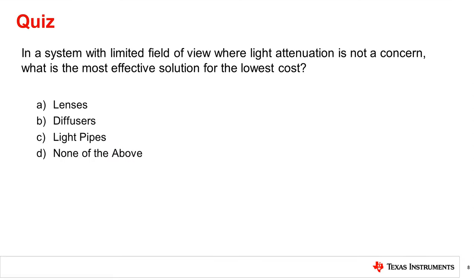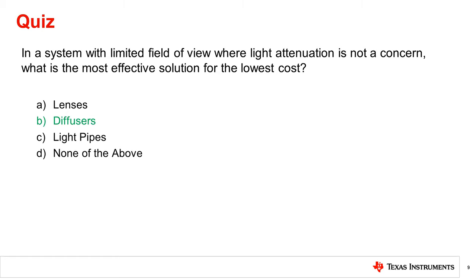In a system with limited field of view where light attenuation is not a concern, what is the most effective solution for the lowest cost? The correct answer is B. Diffusers are usually the lowest cost way to increase a limited field of view. This will come at the cost of some light attenuation.